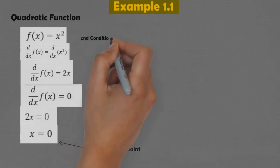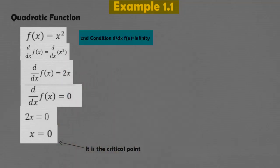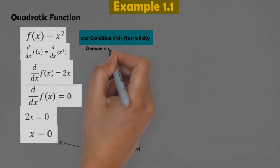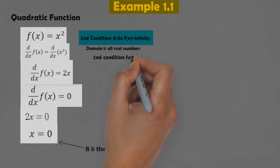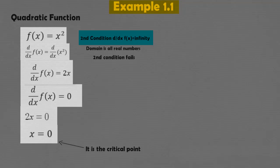Now applying the second condition for a critical point, which is looking for points where the derivative does not exist or is infinity. By inspecting the function f(x), we find that f(x) is defined for all real numbers, which means there is no point where f is undefined. Therefore no other critical point exists for this function, and the only critical point is x = 0.